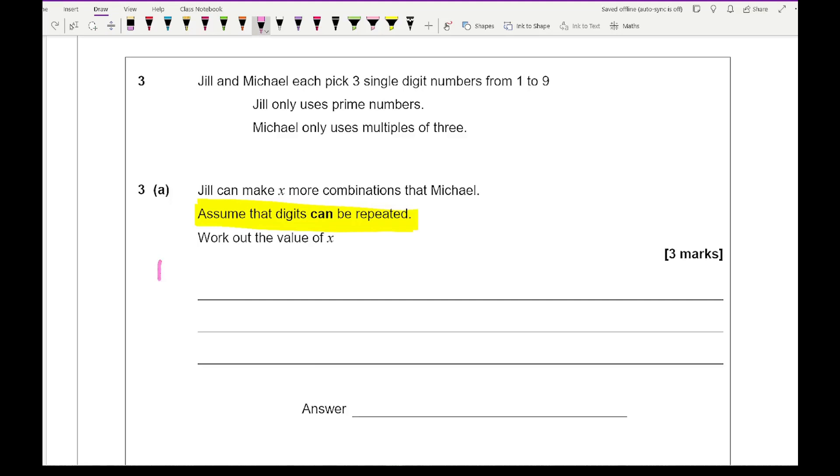In terms of Jill's options, Jill's only picking prime numbers, so that's going to be 2, 3, 5 and 7, so there's 4 possible numbers she can choose from. Whereas with Michael, he's only picking multiples of 3, so that's 3, 6 and 9, so there's 3 options. So for Jill, that's going to be 4 times 4 times 4, and for Michael that's going to be 3 times 3 times 3. Now 4 cubed is 64, 3 cubed is 27, so if I take away those two numbers I get an answer of 37.